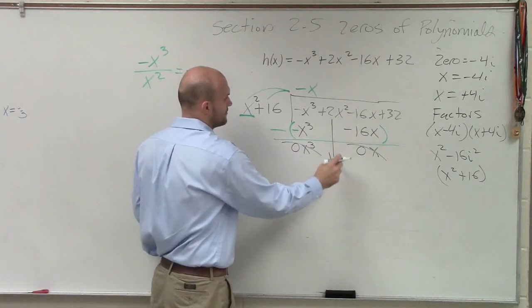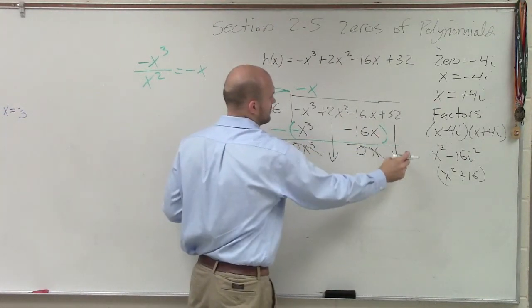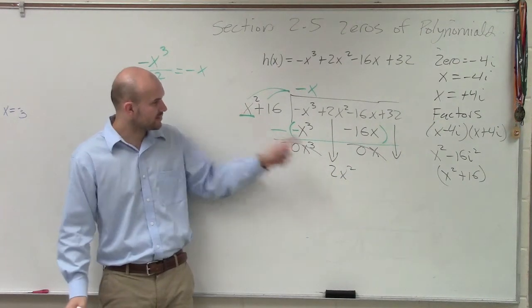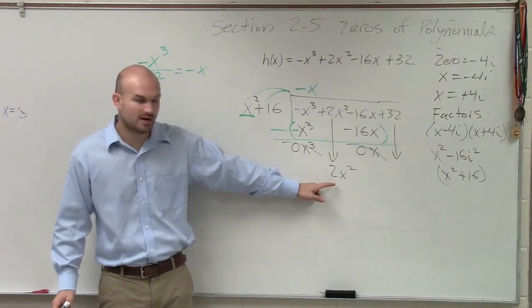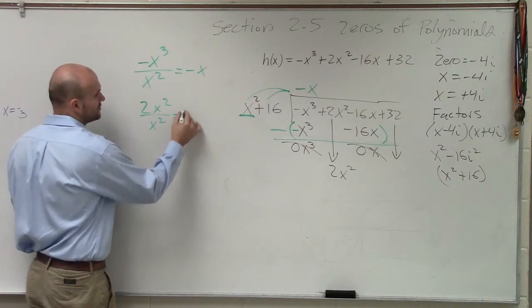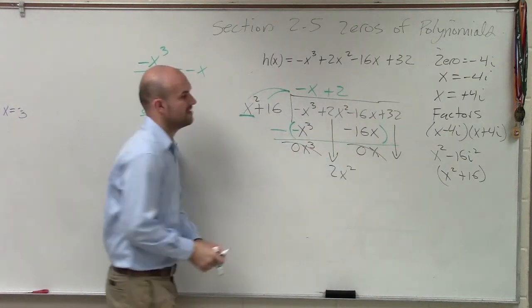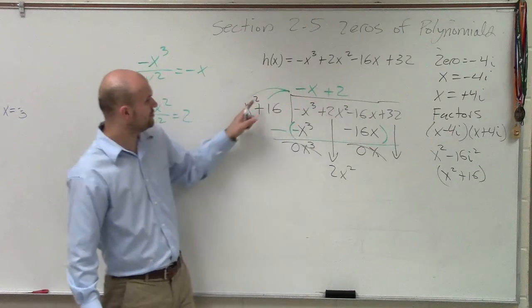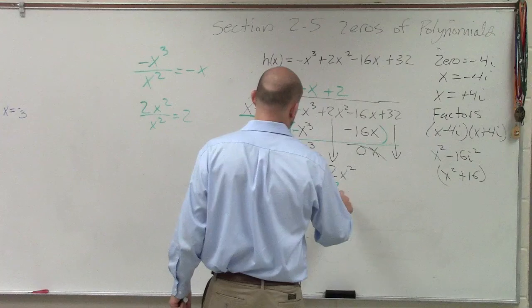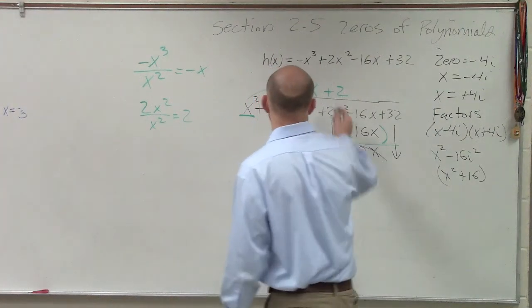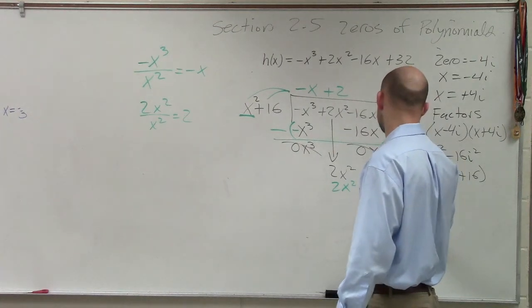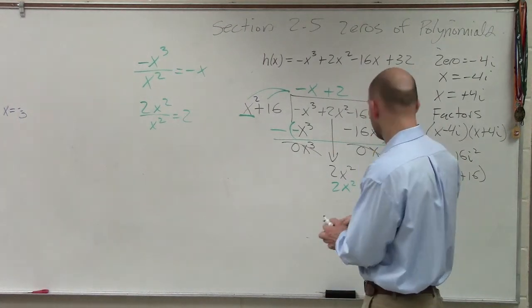Now we break down the next term. So now I have 2x². And you do the whole process again. x² divides into 2x². 2x² divided by x² equals 2, positive 2. Then you multiply the 2 times both terms. So therefore you get 2x², and then 2 times 16, and you get a positive 32. And remember, I brought down this 32.